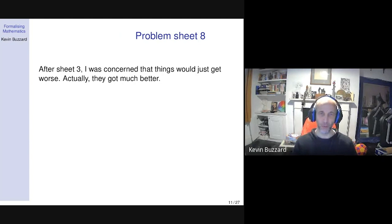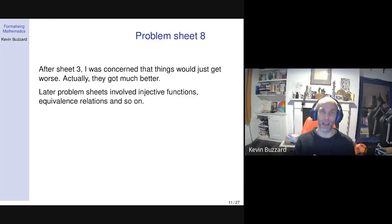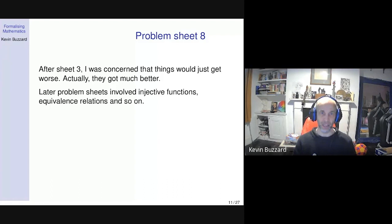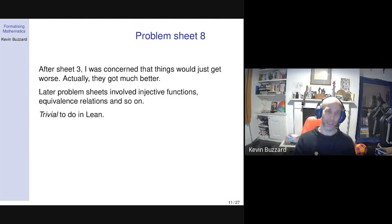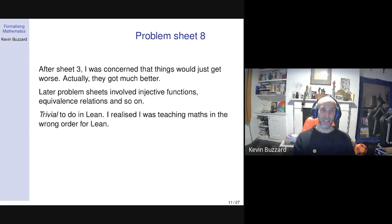Somehow I couldn't do problem sheet three. But pressing on — skipping forward to problem sheet eight — you might think it would be completely impossible in Lean. But actually problem sheet eight was really, really easy to do in Lean. I had enough skills to do that problem sheet myself, because it was all about injective, surjective, and bijective functions and equivalence relations: axiomatic mathematics. The real numbers are a really complicated object, but an equivalence relation is defined by a small number of axioms. Someone has typed these axioms into the system, and even the theorems students find complicated about equivalence relations were things I found very easy to type into Lean.